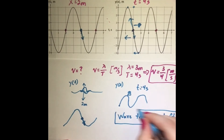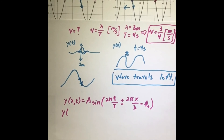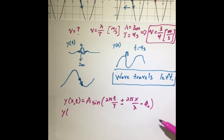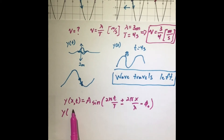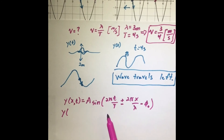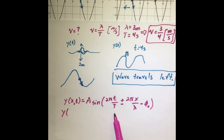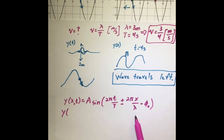The wave travels left — that is the solution for part two, the direction of wave travel. For the last part, we want to find the phase constant phi naught. Looking at our generic wave equation: y(x, t) equals amplitude times sine of (2π·t/T ± 2π·x/λ − φ₀), where the amplitude is the height of the wave, T is the period, λ is the wavelength, and φ₀ is the phase constant we want to find.